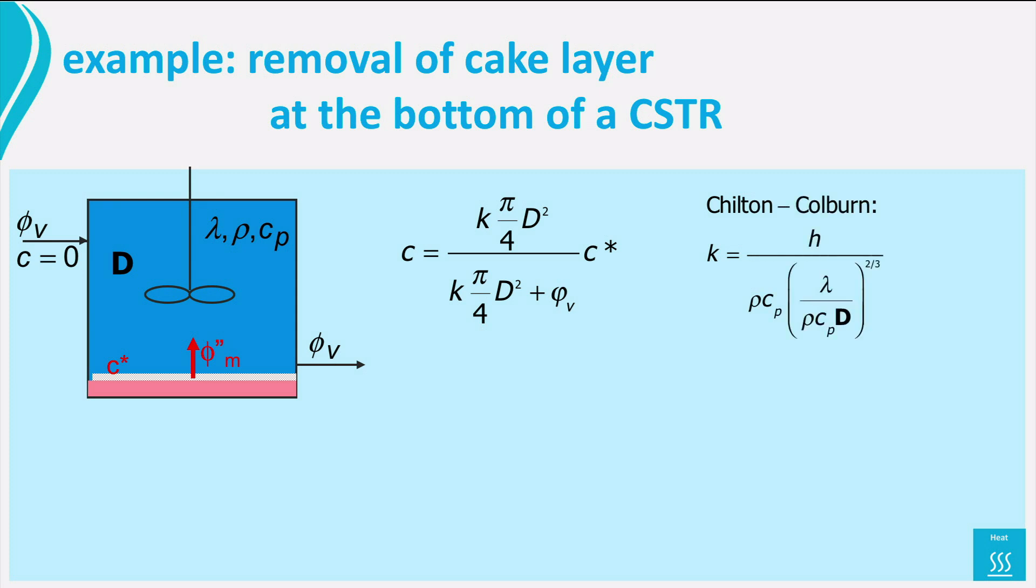From the Chilton-Colburn relation we can find K from H. Thus, C is actually known. Then computing the mass flux from the cake to the water is a piece of cake. And from that you can set up a mass balance for the cake layer and compute how long it takes to completely remove it.